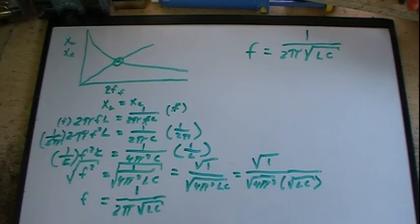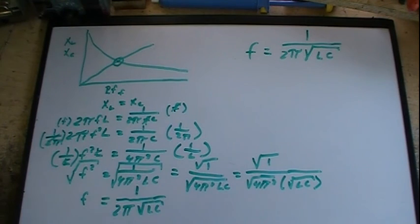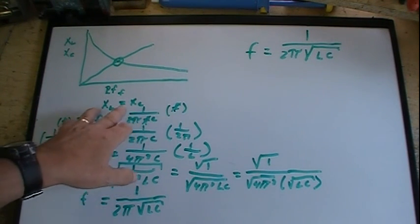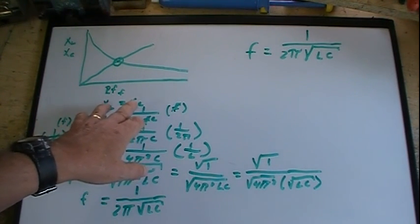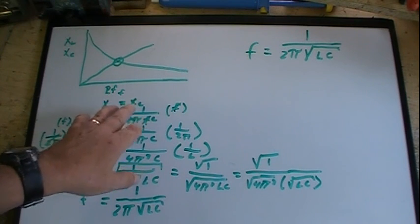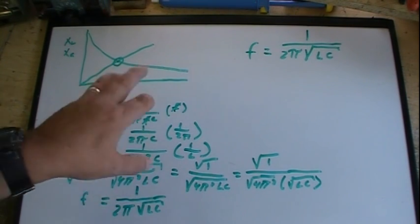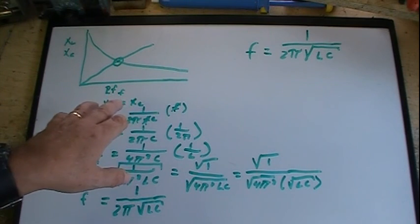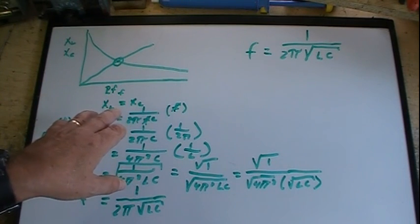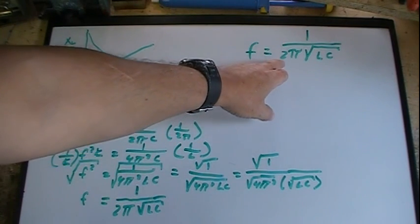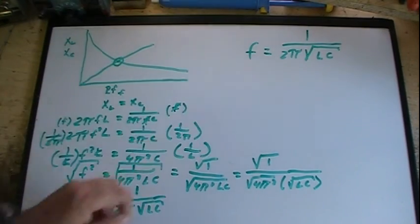And that's how we get it. You don't have to know this derivation. The biggest thing is to realize I start out with the inductive reactance formulas — one for capacitance and one for inductance — and when I make those two equal, it breaks down to the resonant frequency formula.